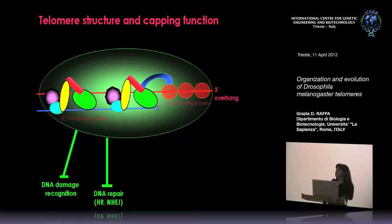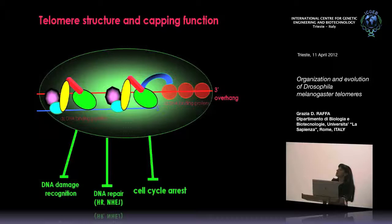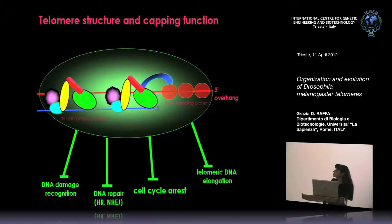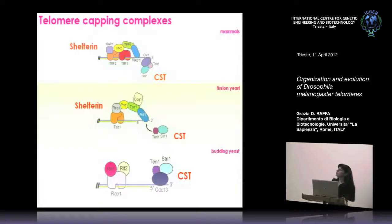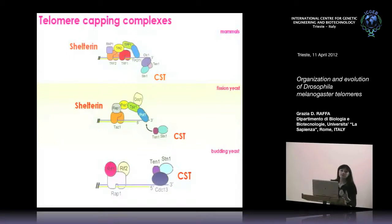The capped telomere is prevented from fusing to other chromosomes, avoiding genomic rearrangements. It also inhibits the activation of cell cycle checkpoints, prevents cell cycle arrest, and regulates the access of telomerase for telomere elongation. How is this achieved in various organisms? The telomere capping complexes vary: our telomeres are protected by shelterin, a complex of six proteins that specifically recognize the TTAGGG repeats of mammalian telomeres.